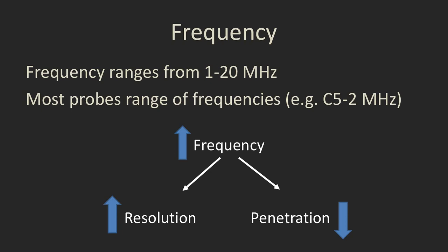Probes produce their ultrasound beam in a range of frequencies. These frequencies vary from about 1 to 20 megahertz in common clinical usage. Most probes can produce a range of frequencies such as C52, which would be a curved probe that is producing between 5 and 2 megahertz. As you increase the frequency, you increase the resolution, but you decrease the penetration that that beam can go.